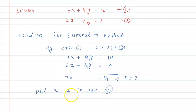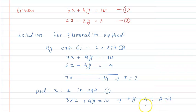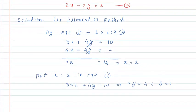Now we put x is equal to 2 in equation 1. So 3 into 2 plus 4y is equal to 10, which gives us 4y is equal to 10 minus 6, which is 4, so y is equal to 1. So by the elimination method, we have found x equals 2 and y equals 1.